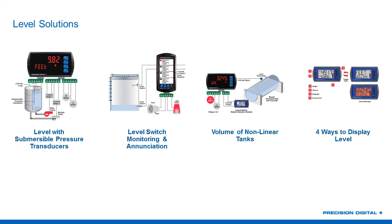We've got four different ways to display level. If they've got displays showing 872 inches and no one knows what percentage of a tank that is, we can show inches, we can show volume, we can show with a bar graph what percent full that is, and we can have a percent readout right on top. So if they already have some way of seeing 872.2 inches, that might not mean much — but maybe they'd really rather see it in percent.